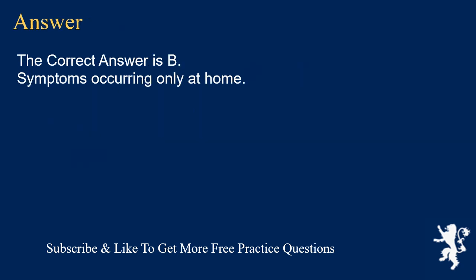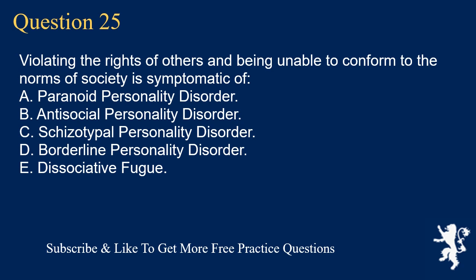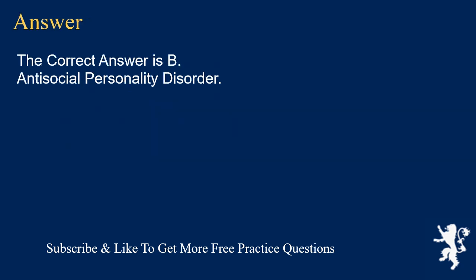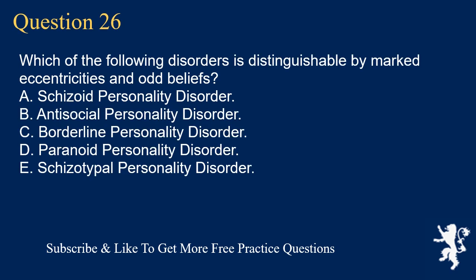Question 25. Violating the rights of others and being unable to conform to the norms of society is symptomatic of: A. Paranoid Personality Disorder. B. Antisocial Personality Disorder. C. Schizotypal Personality Disorder. D. Borderline Personality Disorder. E. Dissociative Fugue. The correct answer is B. Antisocial Personality Disorder.